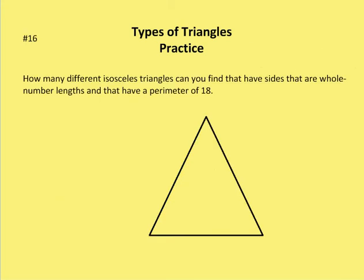For the second and last problem, we're asked to find how many different isosceles triangles you can have that have sides of whole number lengths and a perimeter of 18. You have to remember back to the triangle inequality theorem, which says that the third side has to be less than the sum of the other two sides.